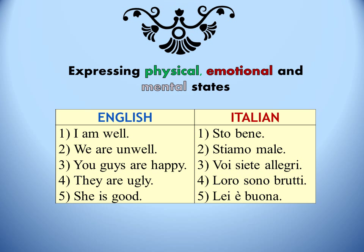To express those same messages, Italians will use the verb stare plus an adverb for the ubiquitous question 'How are you?' — Come sta? — and for its response: 'I am well' is sto bene; 'We are unwell' is stiamo male. But they will use essere plus an adjective for most other expressions of states of being, such as in statements 3 through 5: 'You guys are happy' is voi siete allegri; 'They are ugly' is loro sono brutti; 'She is good' is lei è buona.